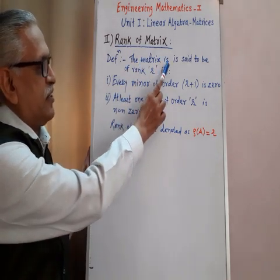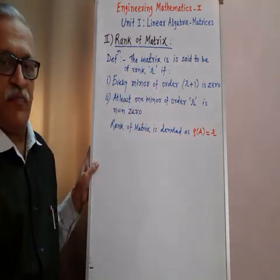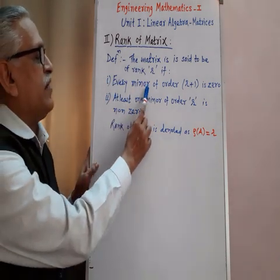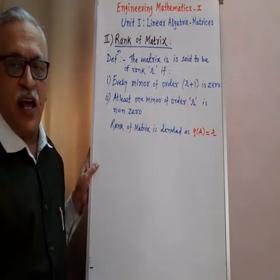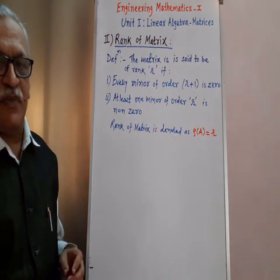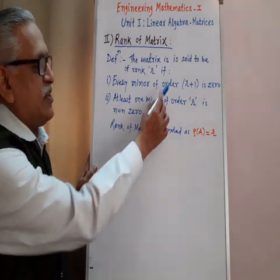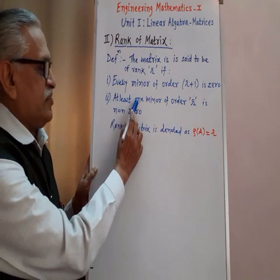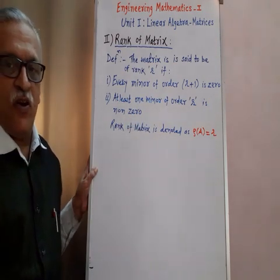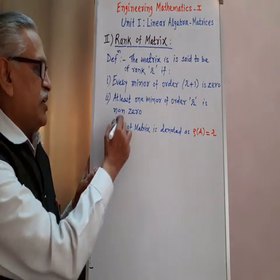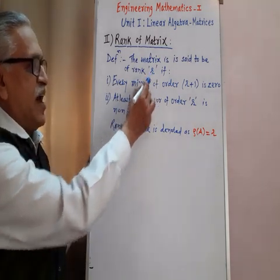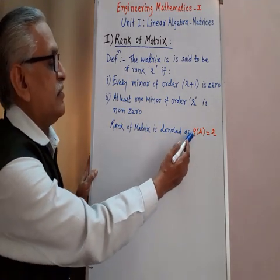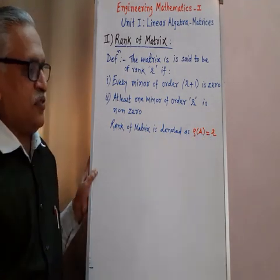The matrix is said to be of rank r, small r, if it satisfies two conditions. Condition number one: every minor of order r plus 1 is 0. Minor means determinant — the determinant of order r plus 1 is 0 or vanishes. And second condition: at least one minor of order r is non-zero. If these two conditions are satisfied, then r is said to be the rank of that matrix, and it is denoted by rho of A equals to r.